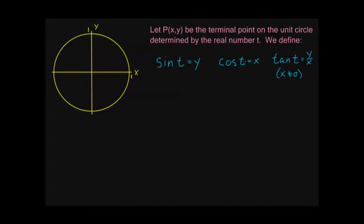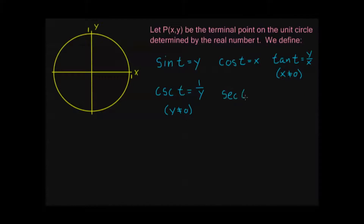The other three trigonometric functions you may or may not be as familiar with: the first one is called cosecant, denoted CSC. Cosecant of t is equal to 1 over y. Because it's 1 over y, y must not equal zero — you can't divide 1 by 0. The next one is called secant of t, defined as 1 over x. Again, x must not equal zero.